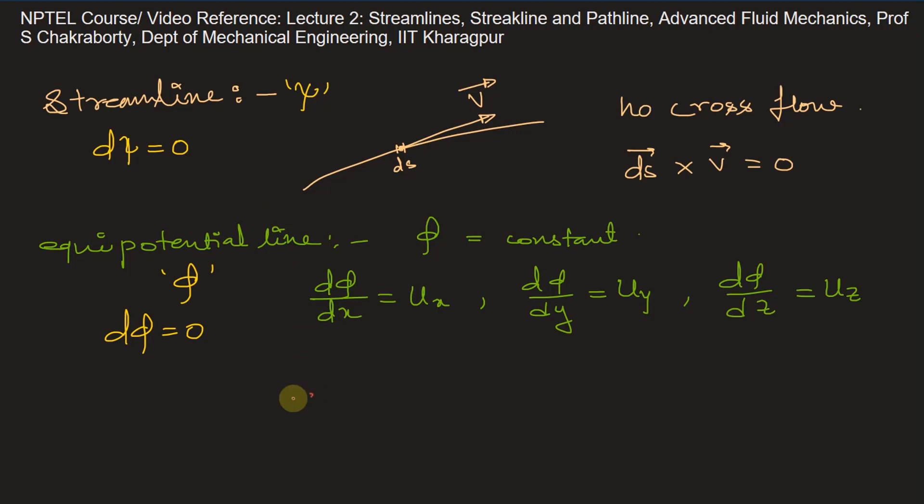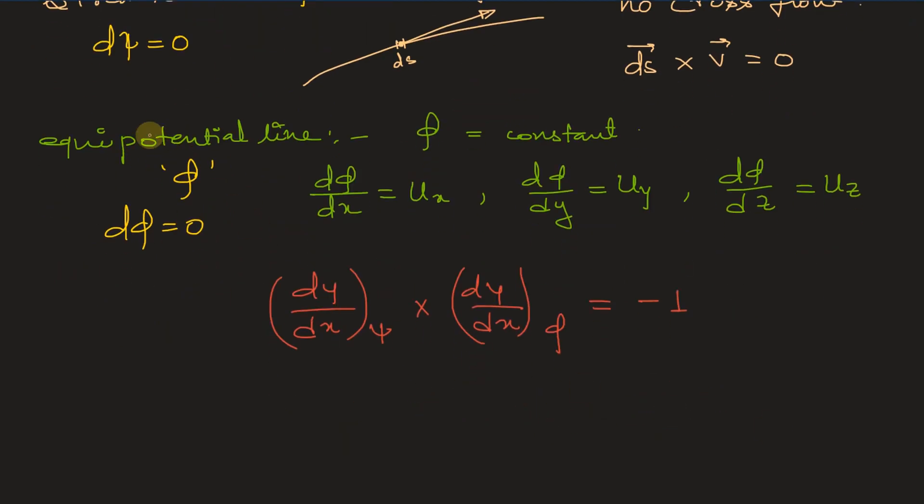The slope of these two, dy/dx of psi multiplied by dy/dx of phi, equals negative one. That means streamlines and equipotential lines are perpendicular to each other.